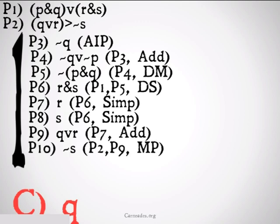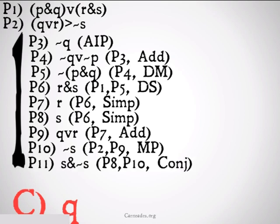From premise 7, addition, which allows us to conclude not s from 2, 9, modus ponens. The problem of course is we now have s and not s from 8, 10, conjunction. This is a contradiction, so our original assumption must have been incorrect. So we can conclude q from 3 through 11, indirect proof. That's what the IP stands for.